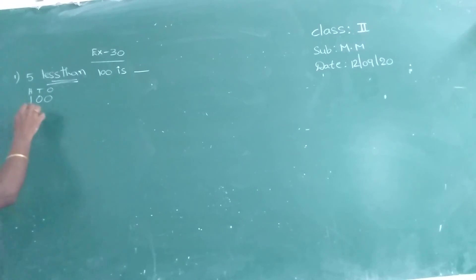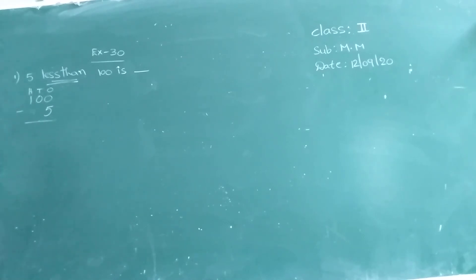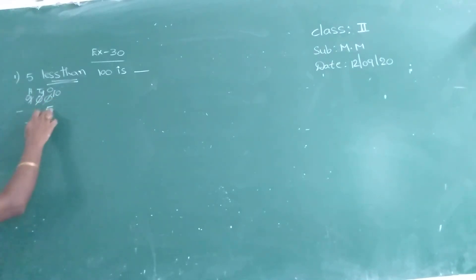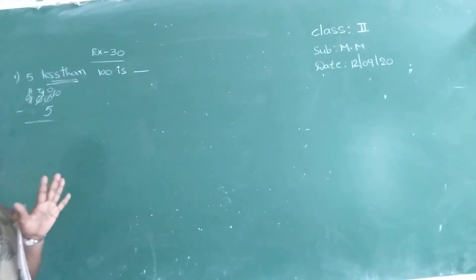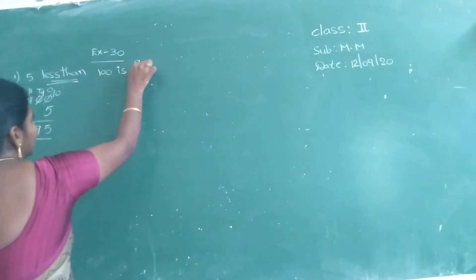The first number has 3 places and the next number has only 1 place. Start from the ones place. 0 minus 5 — we can't subtract. So 0 becomes 10, next becomes 9, next becomes 0. 10 minus 5: open 10 fingers and close 5 — you get 5. Here it is 9, here it is 0. So the answer is 95.